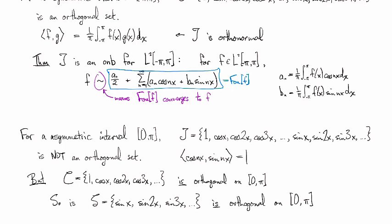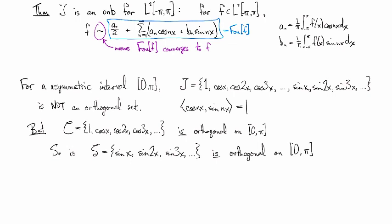This is also orthogonal on the set 0 to pi. By the way, I'm using S for sine, C for cosines, and T for trigonometric just to keep that straight. And so then, it turns out that there's a corresponding theorem that C is an orthonormal basis for L2 of the asymmetric interval.